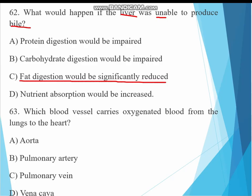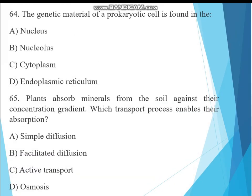Question 63. Which blood vessel carries oxygenated blood from the lungs to the heart? The answer is pulmonary vein. Pulmonary vein carries oxygenated blood from the lungs to the heart.